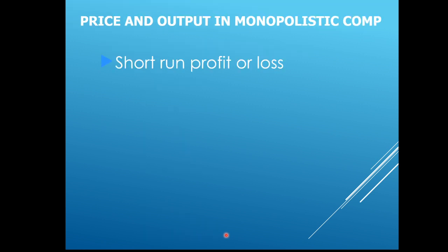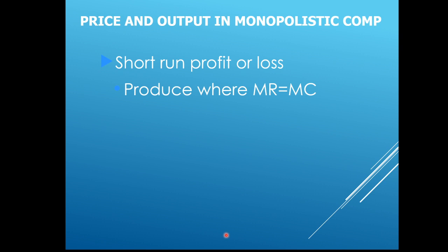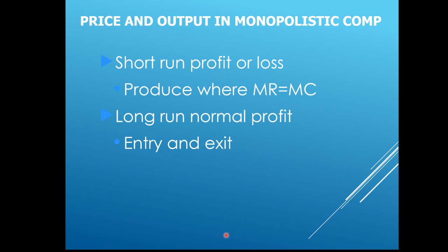There is short-run profit or loss in monopolistic competition — some places are making money, some aren't. Like in the other two market structures, MR equals MC is the key: we produce where marginal revenue equals marginal cost. In the long run, we have normal profit, which is the same as zero economic profit — you're doing no better than you would have done in your next best activity. Once there's profit, firms will enter the market and that profit will disappear.